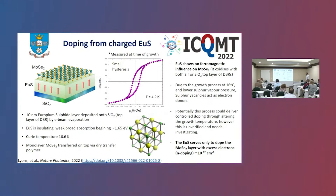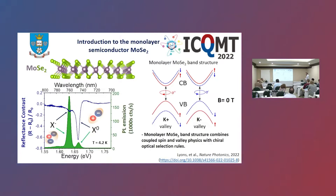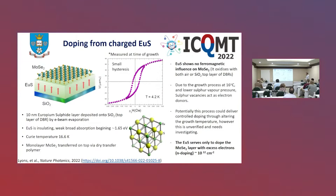What we do get from our EuS is that, thanks to the growth process at 16°C and the low sulfur vapor pressure, sulfur atoms during growth re-evaporate and these sulfur vacancies act as electron donors. Potentially, by controlling the growth process, we could get controlled doping via EuS into our MoSe2. In this study we can repeatably get the same level of doping — about 10 to 12 excess electrons — but we haven't yet varied the growth parameters.